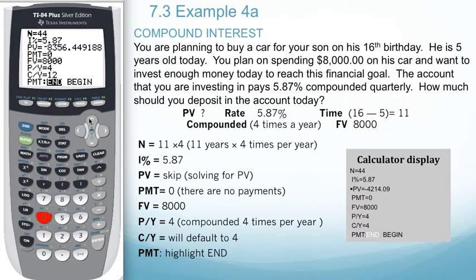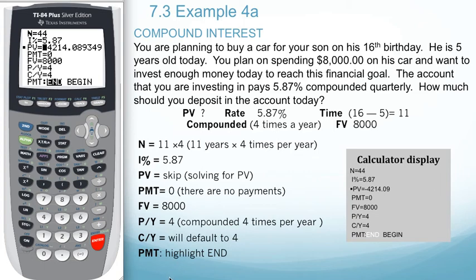Arrow back up to present value. What we want to do now is hit alpha and enter to solve for the present value. In order to reach $8,000 over the course of 11 years, we will have needed to deposit $4,214.09.